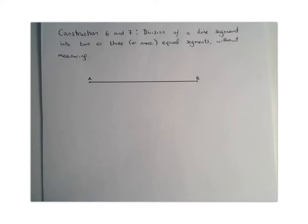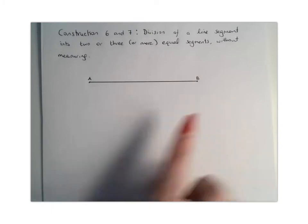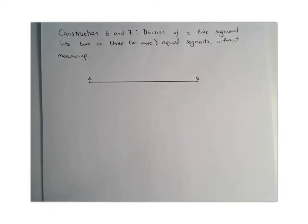Obviously if it was 2 sections or 4 sections, you would just do the same steps but for more or less amounts of times. So we're going to look at splitting our line segment AB up into 3 equal segments.